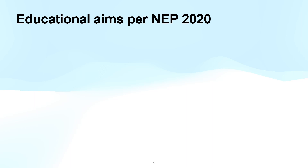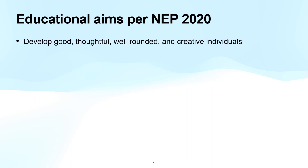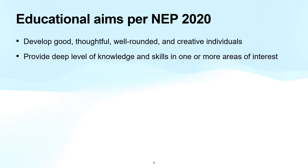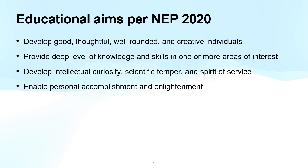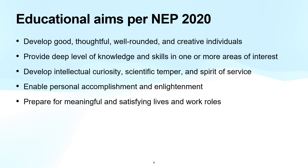India's National Education Policy 2020, for example, states that higher education must aim, among others, to develop good, thoughtful, well-rounded, and creative individuals; provide deep level of knowledge and skills in one or more areas of interest; develop intellectual curiosity, scientific temper, and spirit of service; enable personal accomplishment and enlightenment; and prepare for meaningful and satisfying lives and work roles. Incidentally, such aims are more or less common across nations.